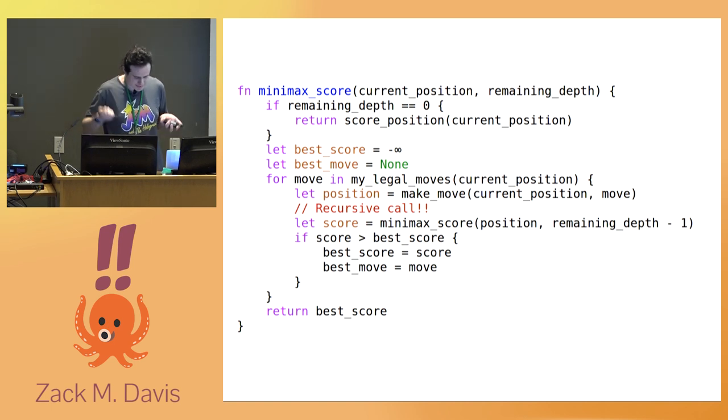So instead of just choosing the move with the best immediate consequences, we want to look at the entire game tree of my best move, given her best move, given my best move, all the way down to some given depth, which you specify in advance, some given depth at which we give up, take the point count at face value, and then sort of propagate that information back up the call stack.